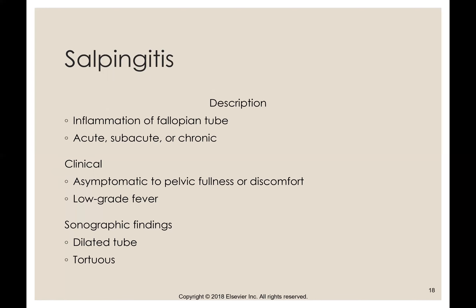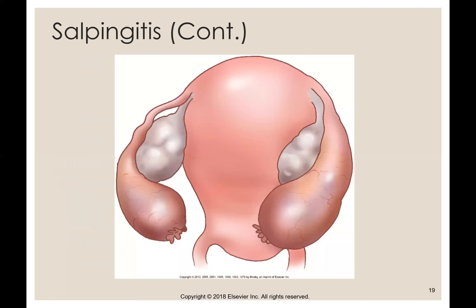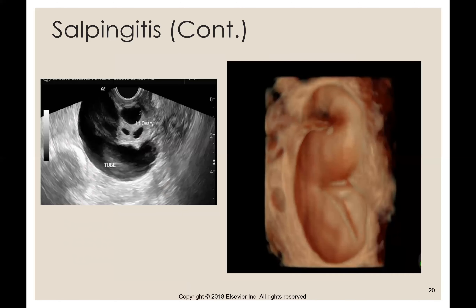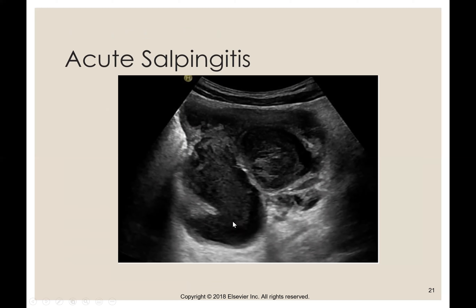Salpinitis is inflammation of the fallopian tube — it can be acute, subacute, or chronic. Clinically, patients are asymptomatic to pelvic fullness and discomfort with a low-grade fever. Sonographically, you're going to see a dilated, tortuous tube — like a snake-like area you can follow in the adnexal region. Looking at these images, you can see how swollen those tubes look. Here's a 3D image showing the fallopian tube being swollen — this is the tube here, this is the ovary — with a snake-like appearance and some fluid or pus within it.